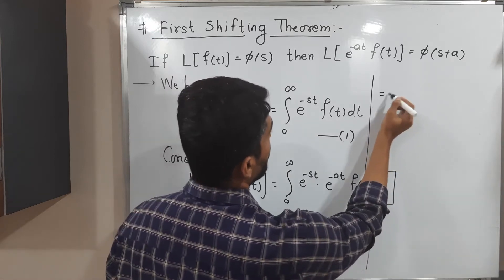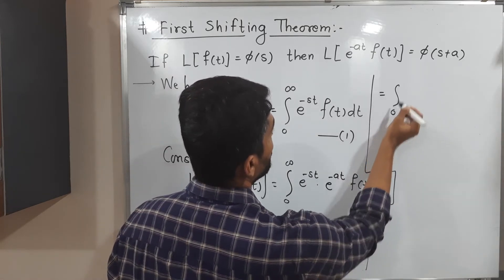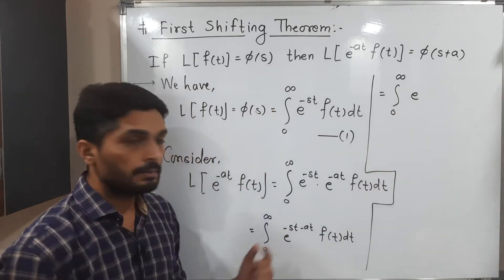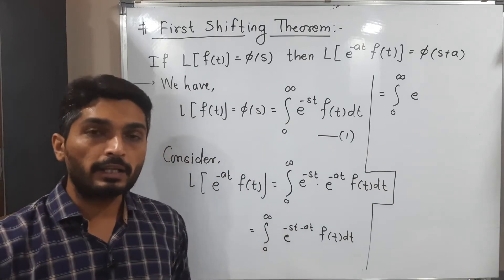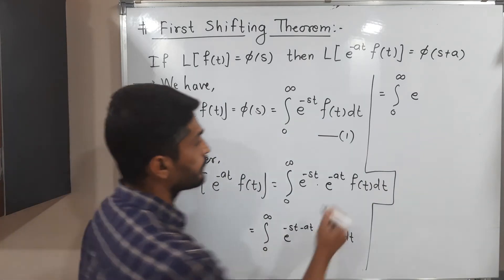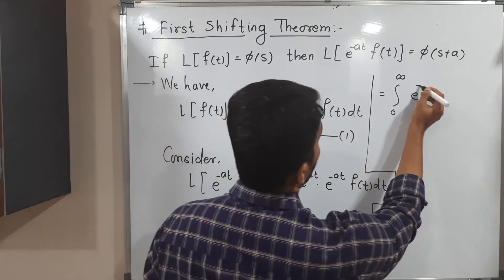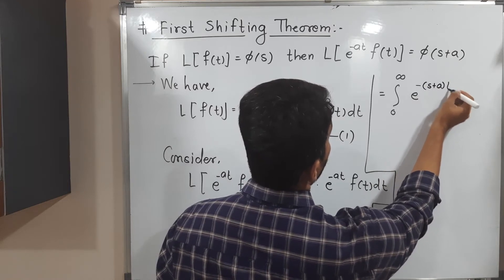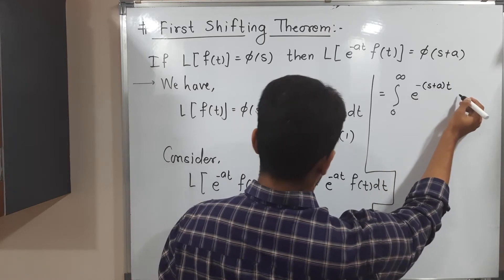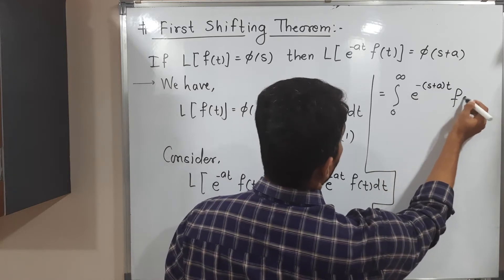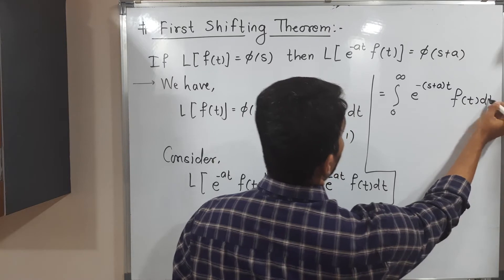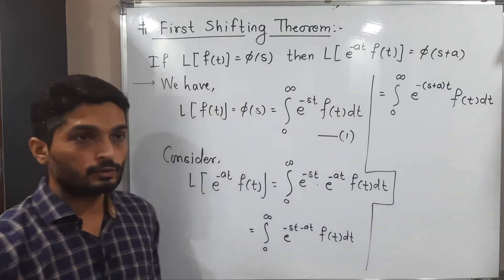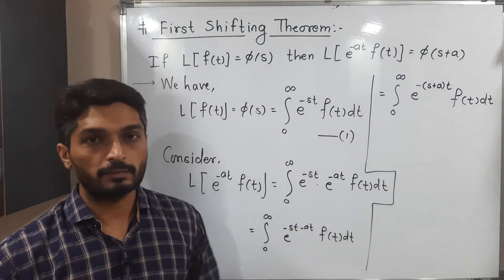This is equal to integration from 0 to infinity of e raised to minus(s + a)t times f(t) dt. We can take minus t as a common factor in the power, so it becomes e raised to minus(s + a)t. This is just a small algebraic adjustment.